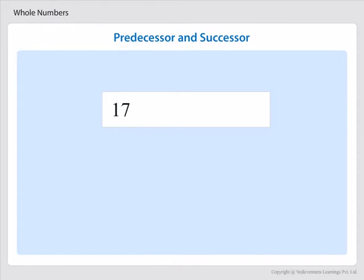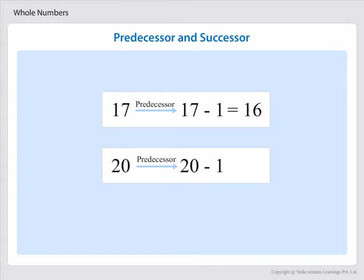The number 16 comes before 17. We say that the predecessor of 17 is 17 minus 1 equals 16. The predecessor of 20 is 20 minus 1 equals 19, and so on.